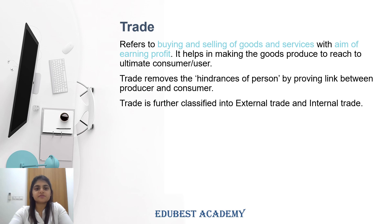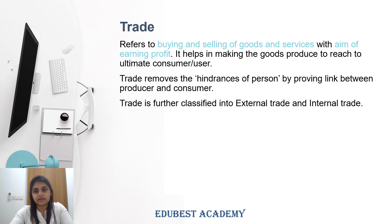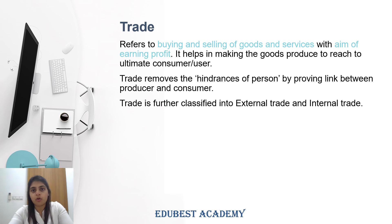Now we'll study the first part of commerce, that is trade. Trade includes all those activities related to buying and selling of goods and services. The major aim of trade is to earn profit. It helps that whatever goods are produced reach the ultimate consumer without any hindrances or problems, and it solves all person-related hindrances in between, because it provides a link between the producer and the consumer.